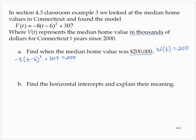To solve this equation, we will first subtract 307 from both sides. So -8(t-6)² is equal to -107, and then divide by the -8. So t minus 6 squared is equal to 13.375. Now we'll use the square root property, so t-6 would be positive or negative square root of 13.375.